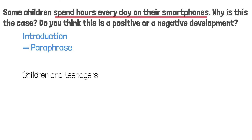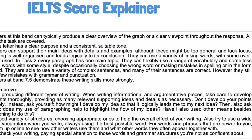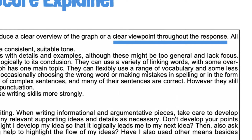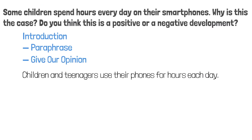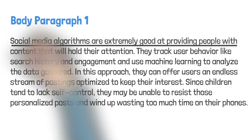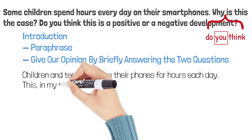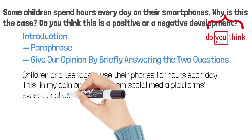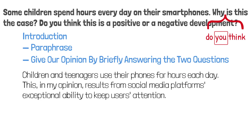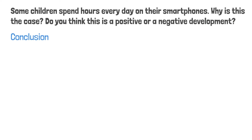In terms of 'spend hours on their phones,' I will instead say 'use their phones for hours.' Next, we need to give our opinion. Our opinion needs to be clear throughout the response — it needs to be clear from the very beginning in the introductory paragraph. So in the introductory paragraph, you have to briefly state why you think this is the case. We've already said this is because social media algorithms are extremely good at providing people with content that will hold their attention. This, in my opinion, results from social media platforms' exceptional ability to keep users' attention. We also need to briefly answer the second question: 'It should be viewed as a negative development because it can be harmful to children's mental health.'